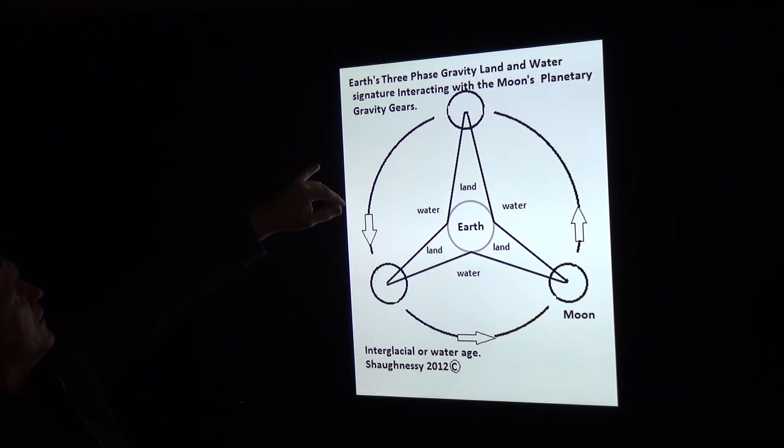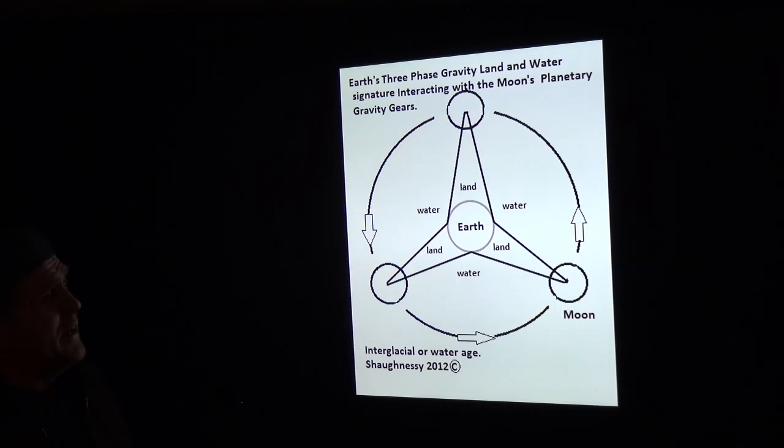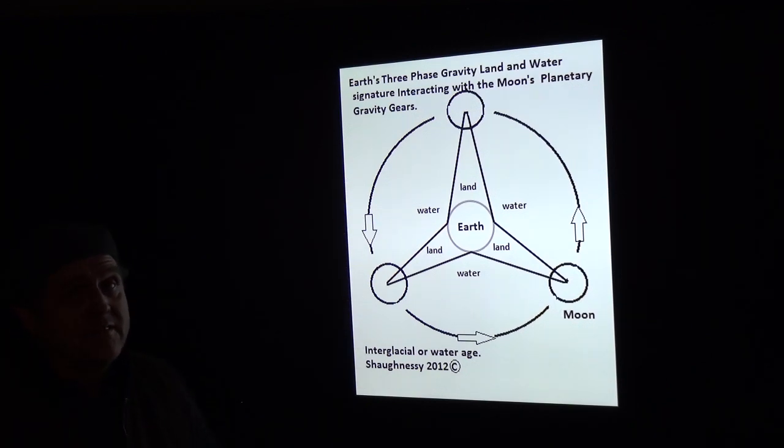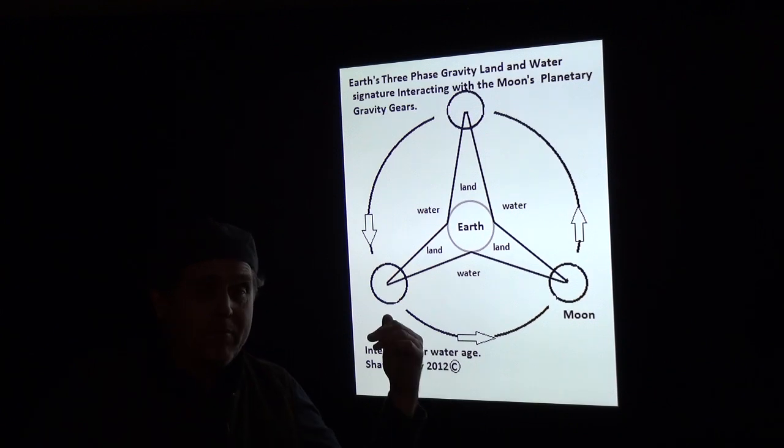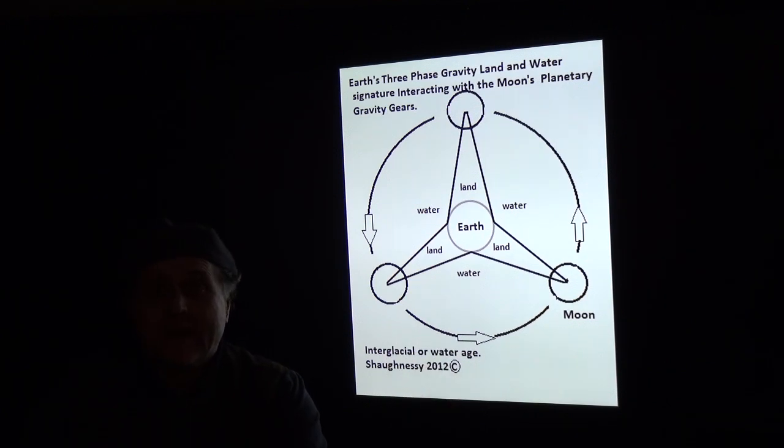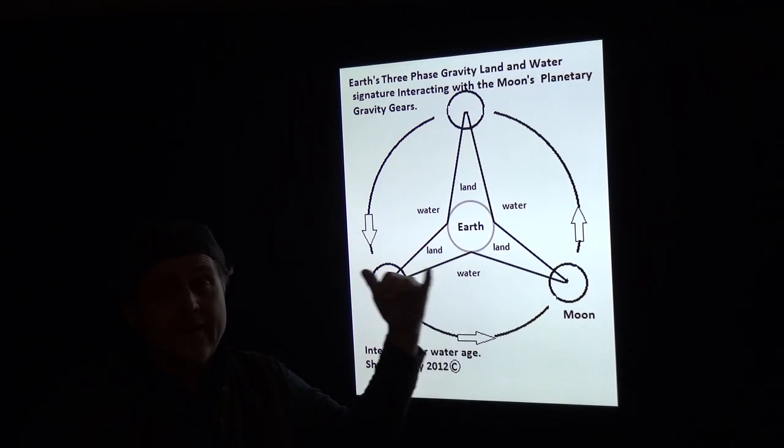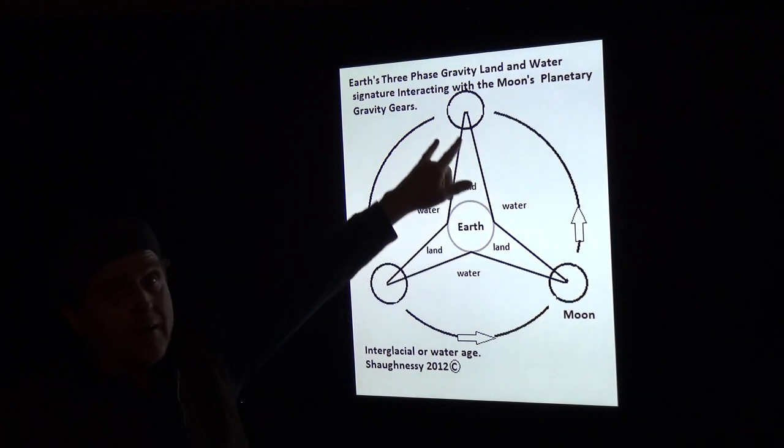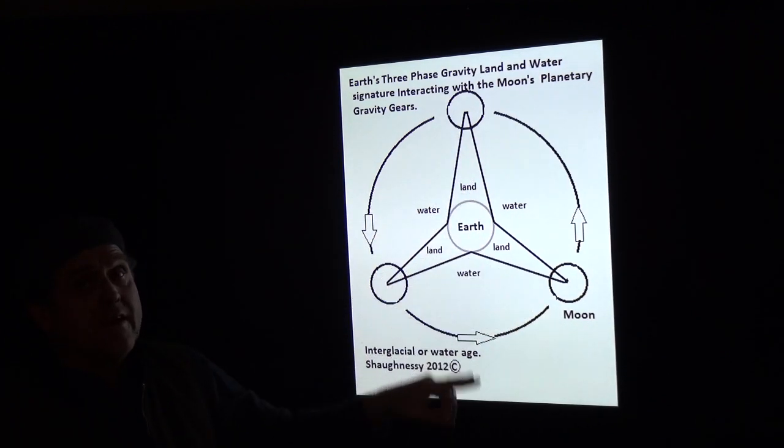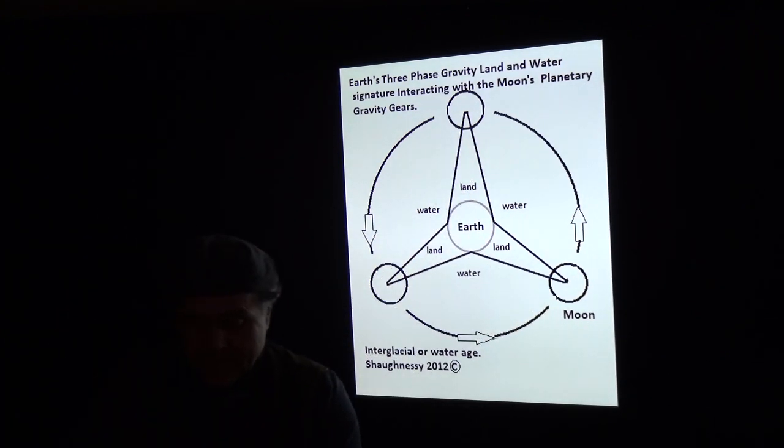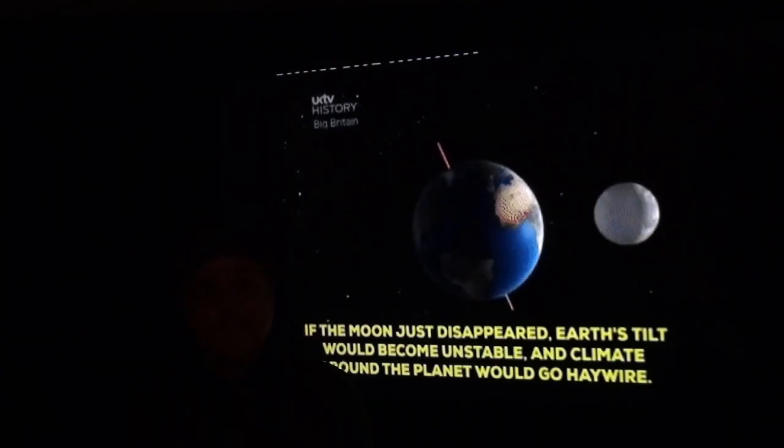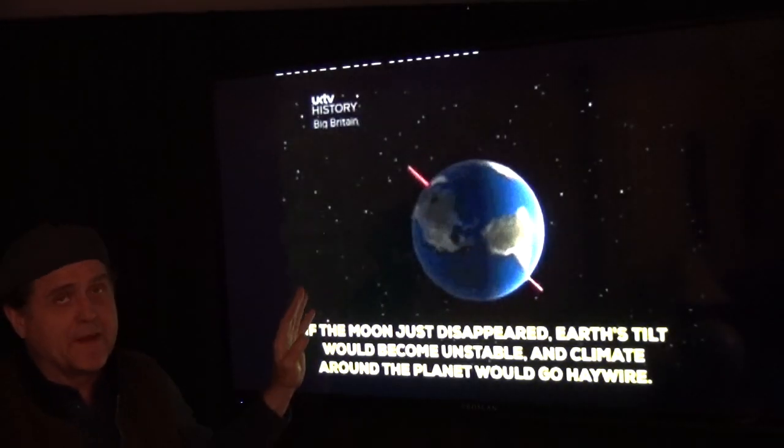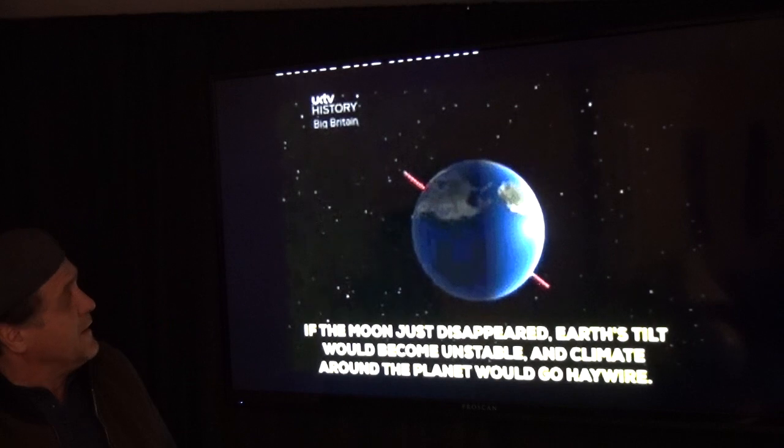This is the three phase signature from the interglacial or water age, 2012, actually I think it's like 2012 and a half, 13 anyways. Earth three phase gravity land water signature interacting with the moon's planetary gravity gears. Get my book if you're interested in this stuff. The moon has five or six high density gravitational zones that are actually gears that mesh up with the gravity gear that the earth puts out. There's reasons for that but I'm sticking with the magnetic field right now.